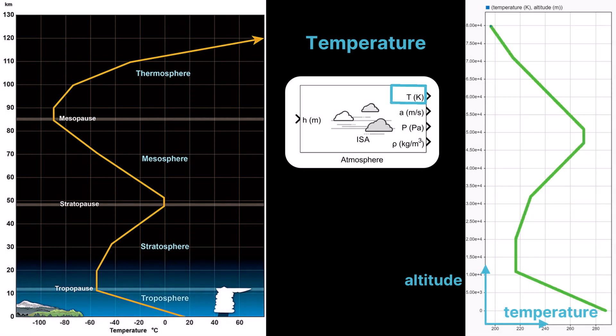The atmospheric temperature model exhibits distinct variations with altitude and serves as the foundation for standard atmospheric simulations. In Simulink, the ISA atmosphere block generates the corresponding temperature versus altitude profile.